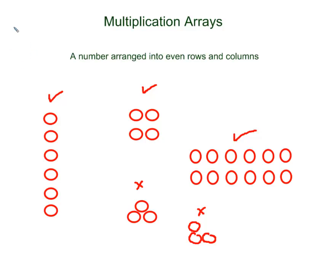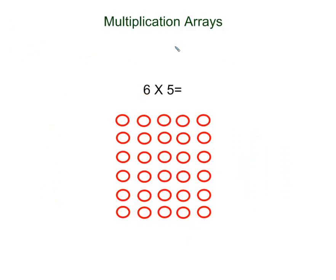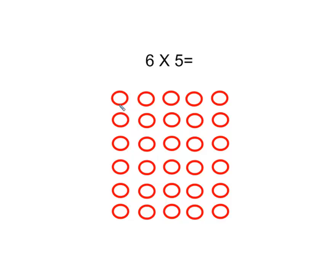So how do we use arrays to help us with multiplication? Here we have a multiplication fact: 6 times 5. So 6 times 5 is 6 groups of 5. Let's see where that is in our array. Remember, an array is even rows and columns. How many rows do I have? 1, 2, 3, 4, 5, and 6. So I have 6 rows, and inside each row I have 1, 2, 3, 4, 5. So I have 6 rows of 5.